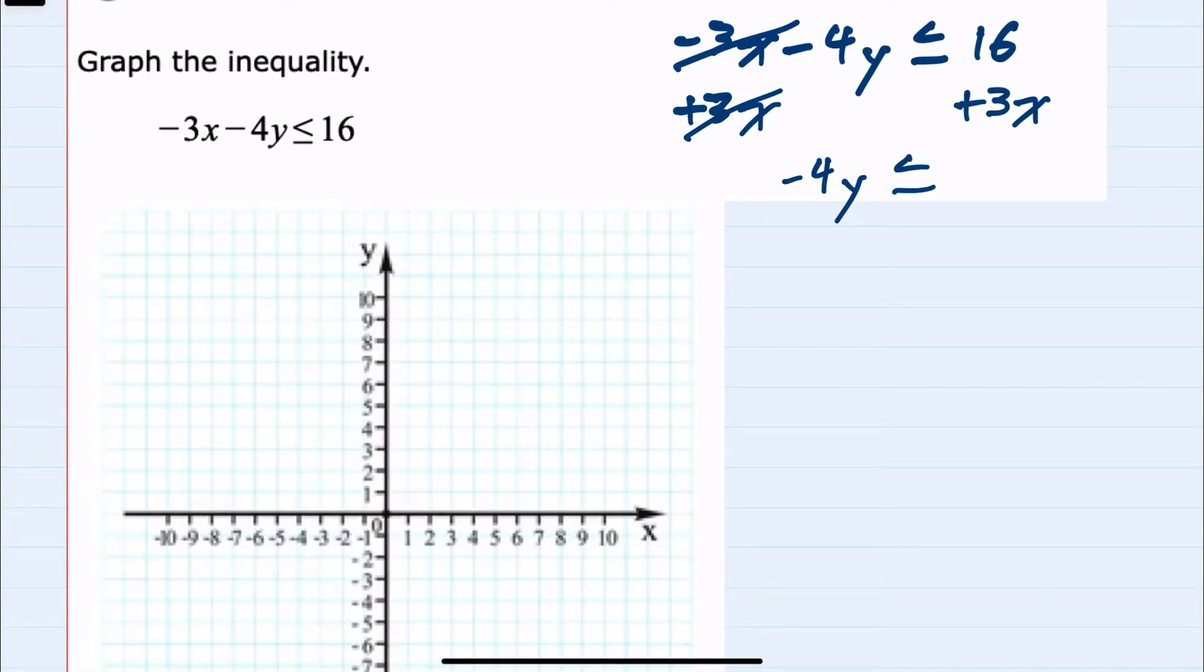Since I'm trying to get y = mx + b form, I'll write the x term first: 3x + 16. Then to solve for y, I'll divide each term by -4.